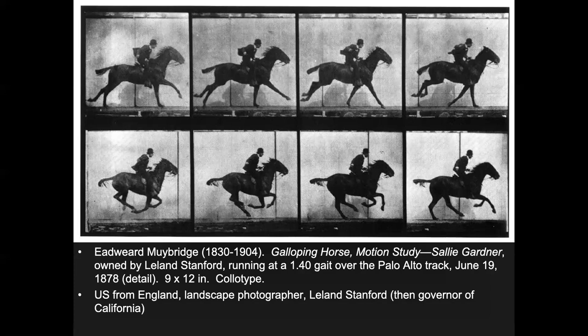Leland Stanford — the governor of California, after whom the university is named — had a bet with friends about this question and gave Muybridge money to buy cameras and set up the experiment. Muybridge set up individual cameras for each frame, connected with tripwires that snapped a picture every time the horse passed by. Each of those frames you see comes from a separate camera.